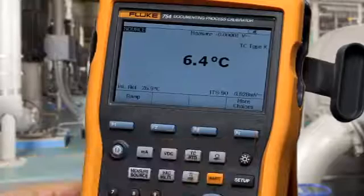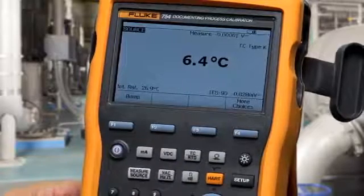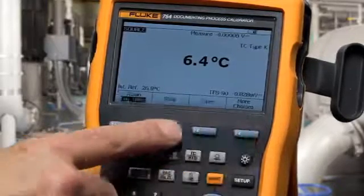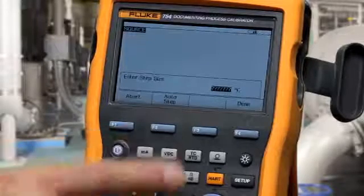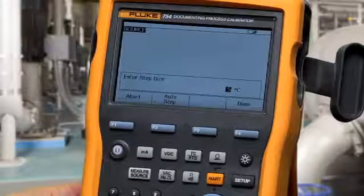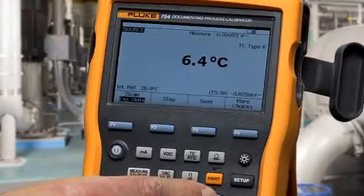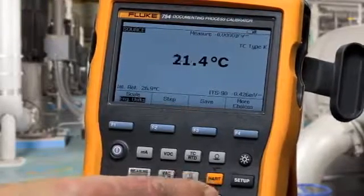Another feature for troubleshooting is stepping the output. Press more choices, select the step soft key, type in a step value, and then use the up and down arrows to change the output in the step sizes that you've programmed.